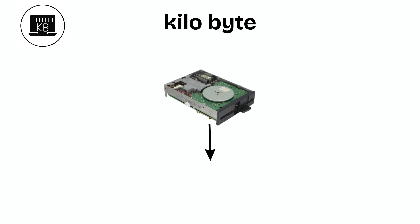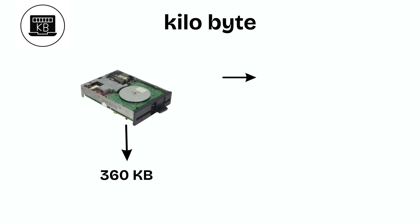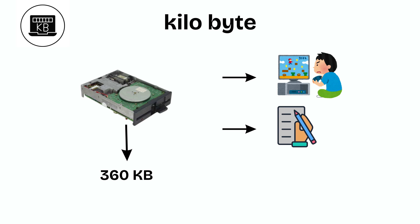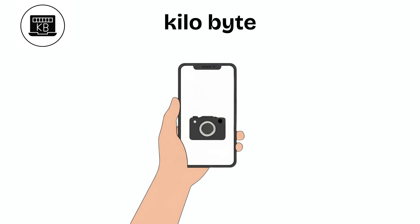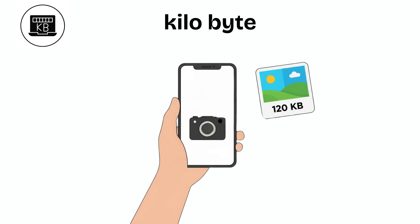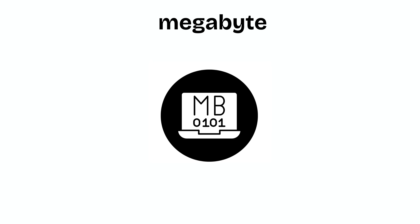The old floppy disk stored just 360 kilobytes, and yet people played games, wrote documents, and even ran business software from it. A kilobyte shows how far technology has come. Today, you can take a single photo on your phone and it's bigger than 100 kilobytes.